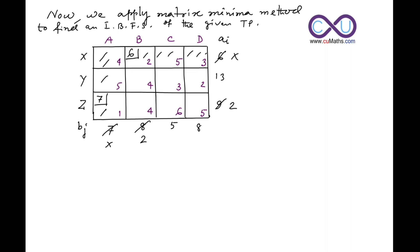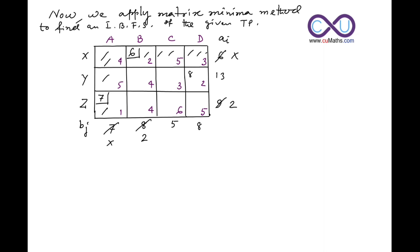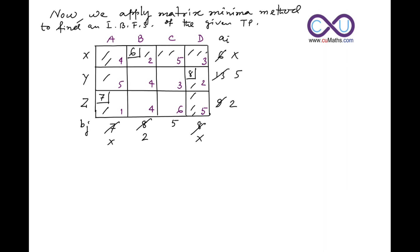Again we observe the remaining cost matrix elements: 4, 3, 2, 4, 6, 5. The minimum is 2, so we insert in this cell. The demand is 8 and the supply is 13, so we insert 8 here and cross out that column. 13 minus 8 gives 5 remaining, so that cell is now closed.